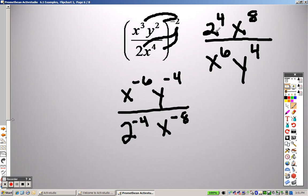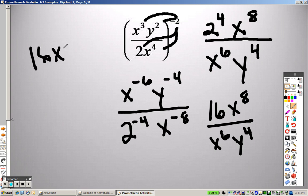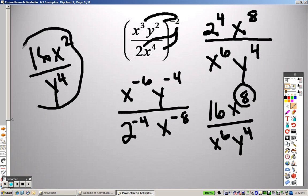So 2 to the 4th is like saying 2 times 2 times 2 times 2, which is 16. So really, of 16x to the 8th over x to the 6th, y to the 4th. 8 minus 6, we end up getting squared, 16x squared, because the 8 is bigger. So it goes on top, and 8 minus 6 is 2, and y to the 4th is on the bottom. And there is your answer.